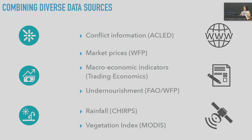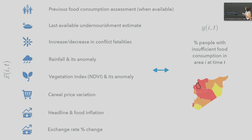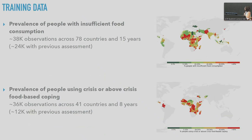Having data collected over more than 30 years allows us to calculate anomalies — whether rainfall or vegetation greenness is worse or better than the historical average for that period. We created a database that is not static but updates automatically every night when new data is available. We also required that the system rely only on open-source and frequently updated data to ensure long-term sustainability. We also had training data: thousands of data points on the prevalence of people with insufficient food consumption and crisis-level coping strategies.